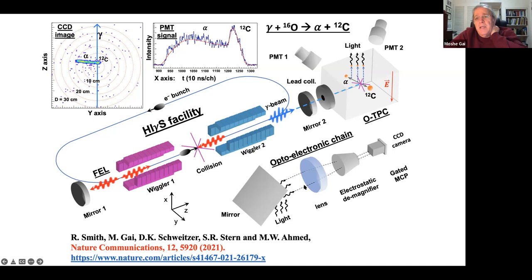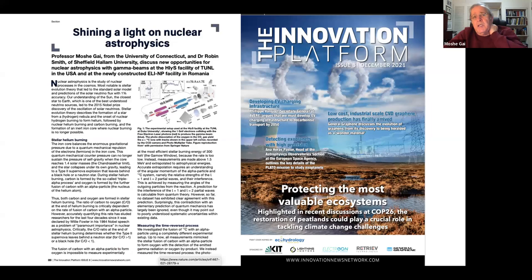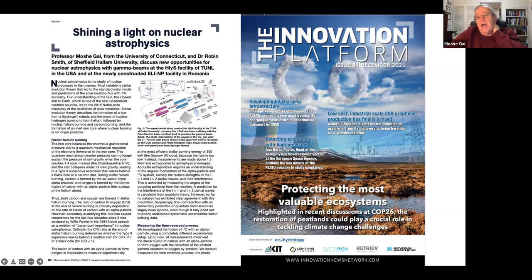Light from the dissociation is detected in PMTs, reflected into an optoelectronic chain, and CCD images are taken. The paper was published in Nature in October. CO₂ gas provides both carbon and oxygen; line shape analysis distinguishes O-16 dissociation from carbon-12 dissociation. We can tell whether a photon collided with O-16 or carbon-12 - though we cannot resolve their energies since they are the same.